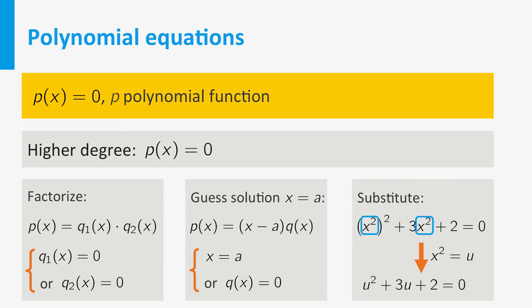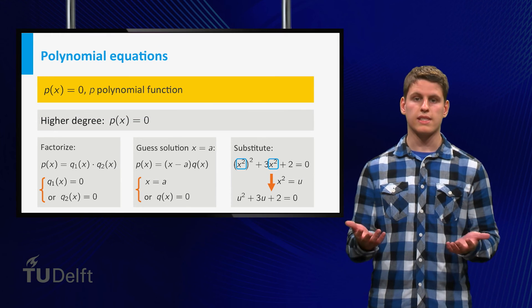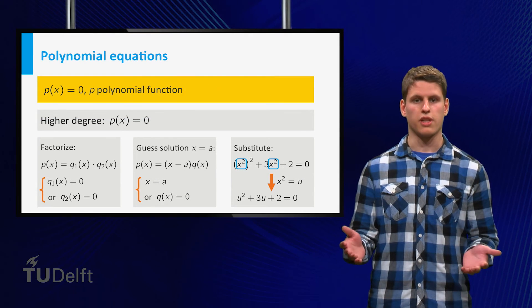Sometimes you can use a substitution to express the polynomial in terms of a new variable, and reduce the degree. But as said, a general method does not exist.